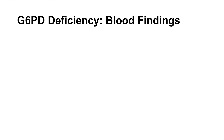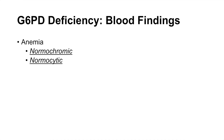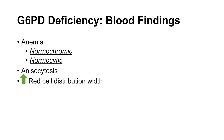What are some of the blood findings of glucose-6-phosphate dehydrogenase deficiency? One of the most common findings on a blood smear is anemia, but the anemia is normochromic and normocytic — so there is no excessive central pallor and cells are typically normal in color. There is anisocytosis with differing shapes of cells, and an increased red cell distribution width, with some cells smaller and some bigger.